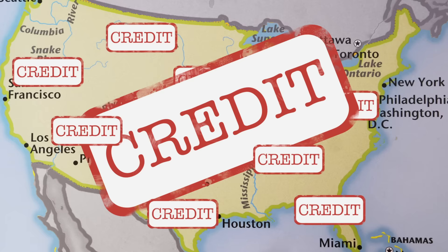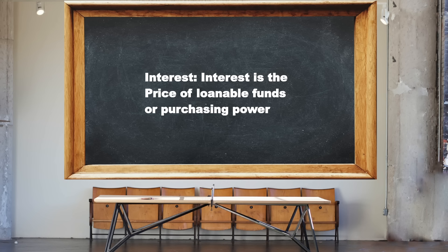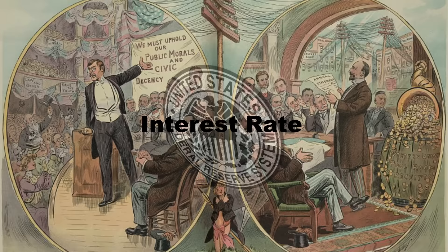The direct mechanism that regulates the credit market and the supply and demand for loanable funds is the interest rate. The interest rate is, in essence, the price of credit. The interest rate is at the center of the theory of credit and purchasing power and the monetary explanation of the business cycle.